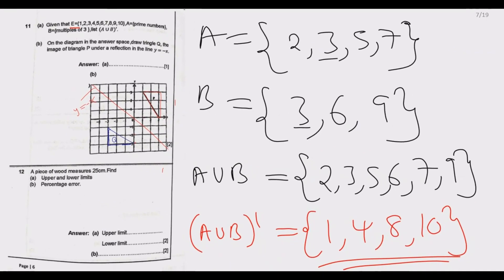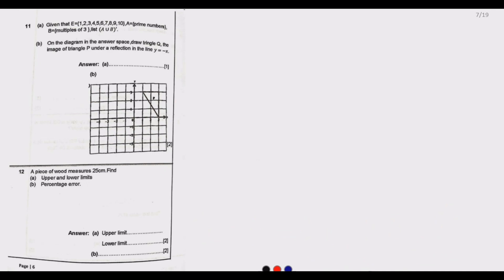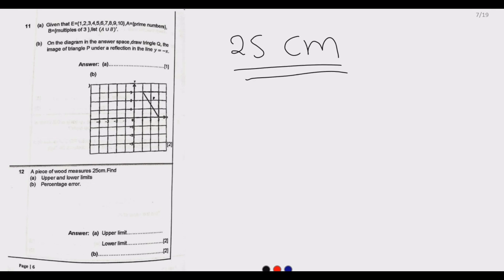Question 12: A piece of wood measures 25 centimeters. Find the upper and lower limits, then find the percentage error. This 25 centimeter measurement could have an error, meaning we could have over- or under-measured by 0.5, which is the sub-unit of one centimeter.